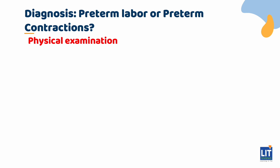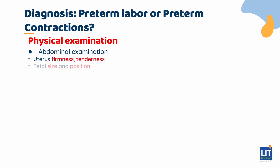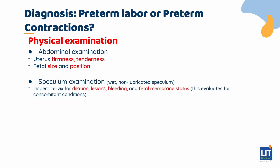Then move on to the physical exam. First, conduct an abdominal examination, evaluating the uterus to assess firmness, tenderness, fetal size, and fetal position. Next, conduct a speculum examination with a wet, non-lubricated speculum. Inspect the cervix, looking for dilation, lesions, bleeding, and fetal membrane status. This also evaluates for concomitant conditions such as placental abruption or preterm pre-labour rupture of membranes.